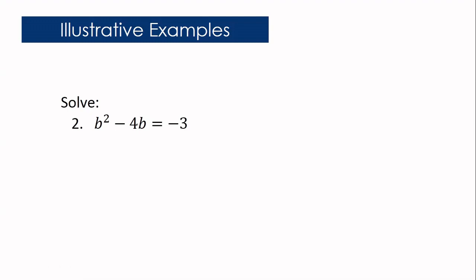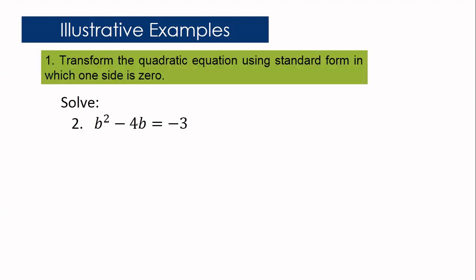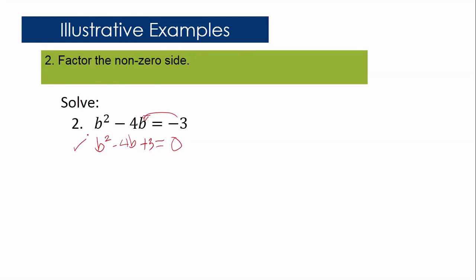Let us consider the equation b squared minus 4b equals negative 3. Step 1: Transform so one side equals zero. Using addition property of equality, add 3 to both sides, giving b squared minus 4b plus 3 equals 0. Step 2: Factor the non-zero side. The factors of 3 that give a sum of negative 4 are negative 3 and negative 1. So the factors are b minus 3 and b minus 1.